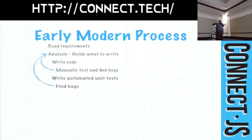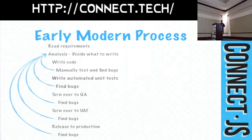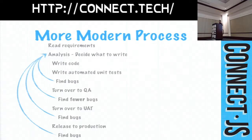So people looked at this and said: why am I manually testing if I've got this automated test that's going to find it? I have to write the test anyway, so why am I manually testing? So they dropped the manual testing, which shortens the feedback loop. Now you're writing code, writing a test, fixing any bugs, making it pass, and pushing it off to QA. The benefit is you start thinking about writing the code to be testable, so your behavior changes slowly.